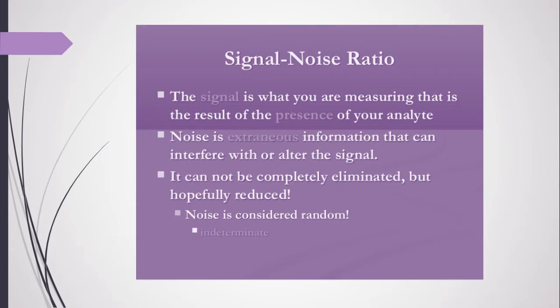Before the main discussion, let's see what is signal and what is noise. Signal is what you are measuring — that is the result of the presence of your analyte. Noise is extraneous information that can interfere with or alter the signal. When you are doing any experiment using an instrument, the response of your instrument will be called a signal, which can be in the form of a graph, a picture, or some mathematical data.